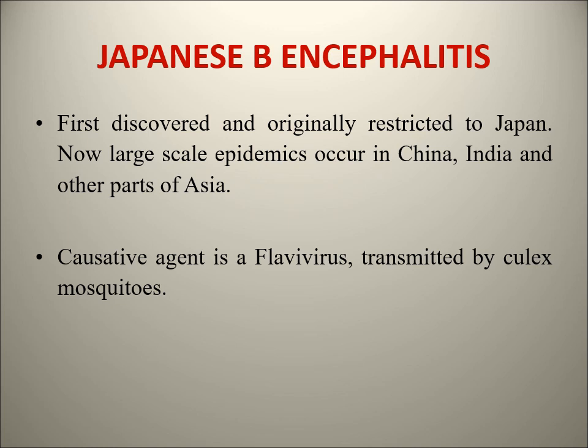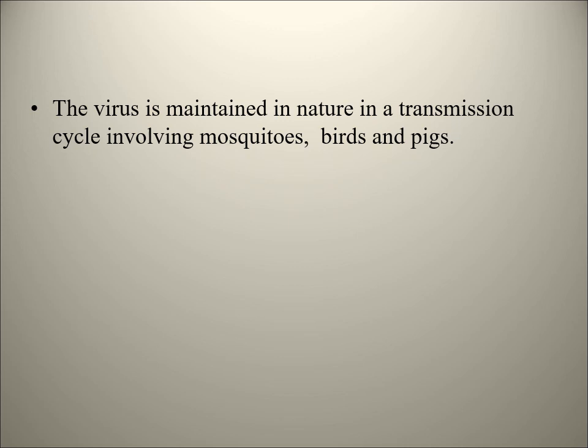The causative agent is a Flavivirus. It is transmitted by Culex mosquito - mainly the species Culex tritaeniorhynchus and Culex vishnoi. The virus is maintained in nature in a transmission cycle mainly involving pigs - Culex takes from pigs and transmits back to pigs. Another cycle exists among birds - Culex takes from birds and transmits back. Pigs act as amplifiers: the virus multiplies exponentially in pigs, pigs show no clinical features, but high-titer viremia allows mosquitoes to pick up large viral loads.